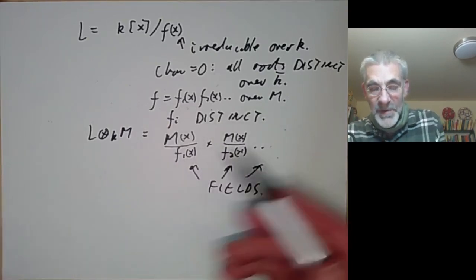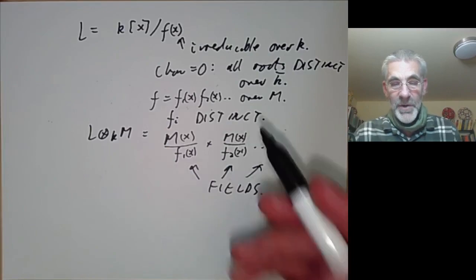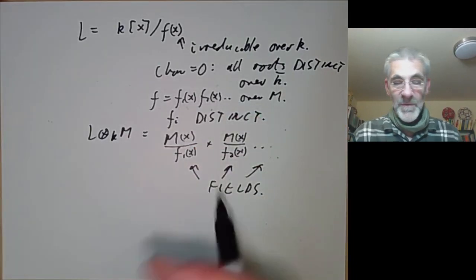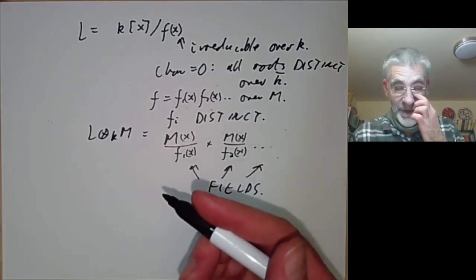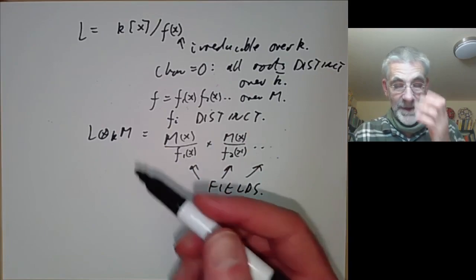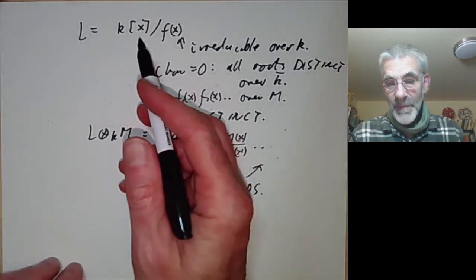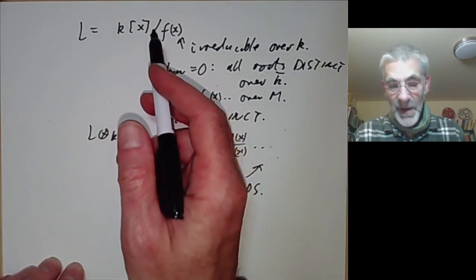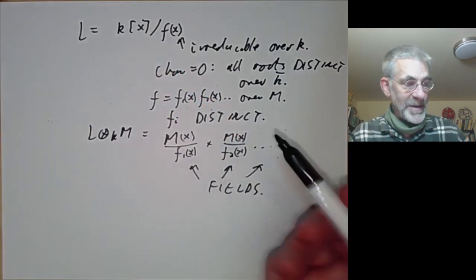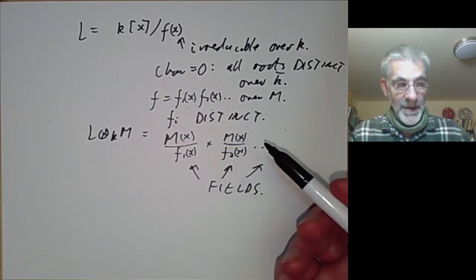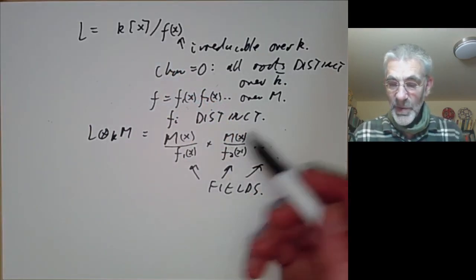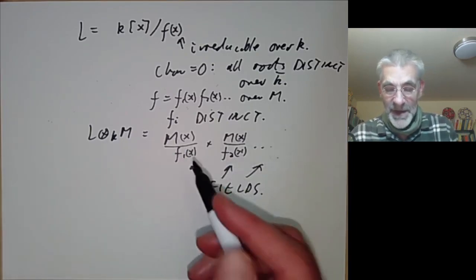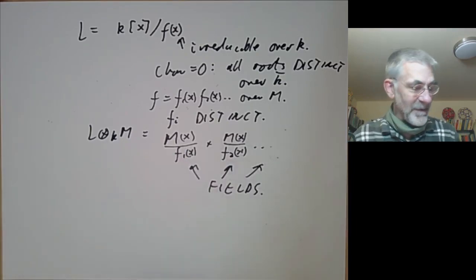So in characteristic zero there are no problems. If we've got a zero-dimensional variety and we look at it over the algebraic closure, its coordinate ring is still a product of fields and it's regular at every point.